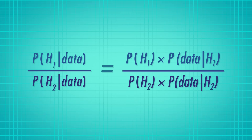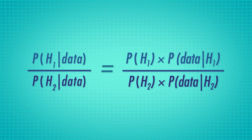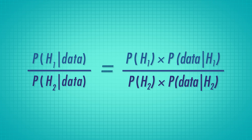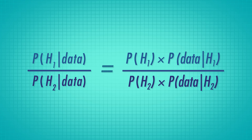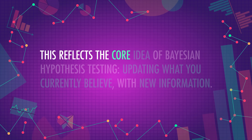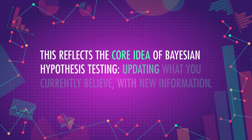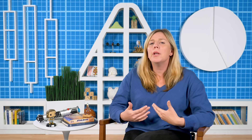In a more general form, we can see that after we see the data, how likely one hypothesis is compared to another is equal to the ratio of how likely we thought these hypotheses were before we got any evidence, adjusted by the evidence which the data provided us. This reflects the core idea of Bayesian hypothesis testing: updating what you currently believe with new information.